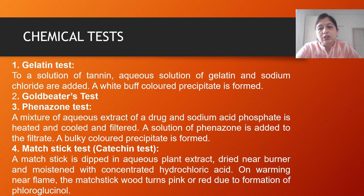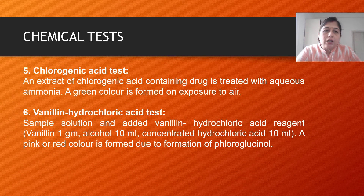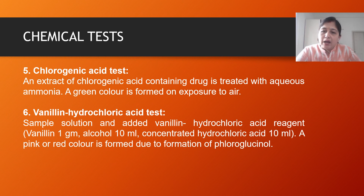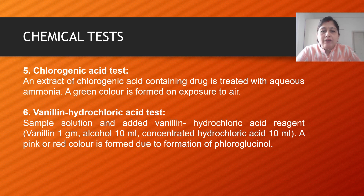The HCl and fluoroglucinol structure formed by the tannins cause the matchstick to take a red color. The lignin present in the wood, along with the fluoroglucinol produced by the tannins and HCl together, gives a red coloration. The next test is the chlorogenic acid test — the extract of chlorogenic acid, which is a pseudo tannin, is treated with aqueous ammonia, and a green color develops gradually on exposure to air. Finally, the vanillin hydrochloric acid test: a sample solution is treated with vanillin hydrochloride reagent and a pink color appears, showing the formation of fluoroglucinol.